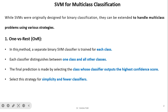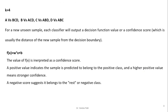The first strategy is One versus Rest. In this method, a separate binary SVM classifier is trained for each class. Each classifier distinguishes between one class and all other classes. The final prediction is made by selecting the class whose classifier outputs the highest confidence score. This strategy is suitable for fewer classifiers and is simple in nature.